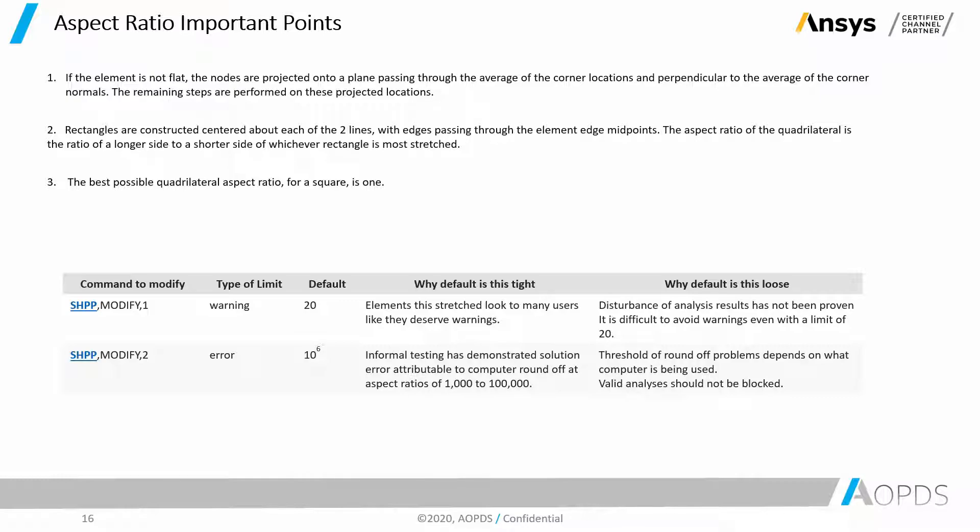Now, let's take a look at ANSYS help and see what ANSYS is offering for aspect ratio. ANSYS is saying, if the aspect ratio of an element is 20, I'm going to give you a warning, and if it is more than 10 to the power of 6, I'm going to give you an error.